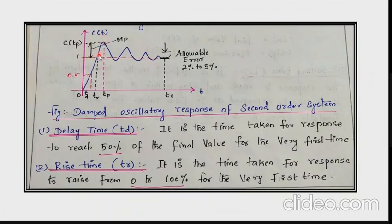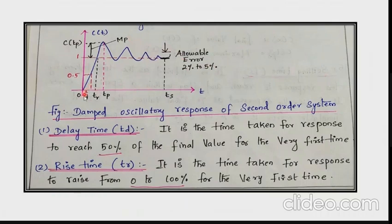The last time domain specification is settling time, where the response settles down finally. Settling time can be measured for a 2% tolerable error or 5% tolerable error. These are the five time domain specifications: delay time, rise time, peak time, maximum peak overshoot, and settling time.